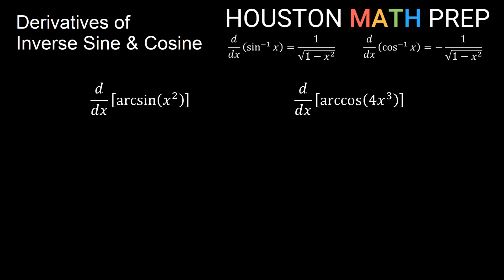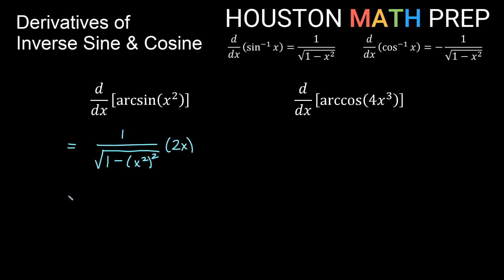Remember that inverse sine can also be called arc sine — you may have seen that term before. This example is the derivative of arc sine of x squared. Using the inverse sine formula, this is 1 over the square root of 1 minus (x squared) squared. By the chain rule, we multiply by the derivative of x squared, which is 2x. Simplifying, we get 2x over the square root of 1 minus x to the fourth.